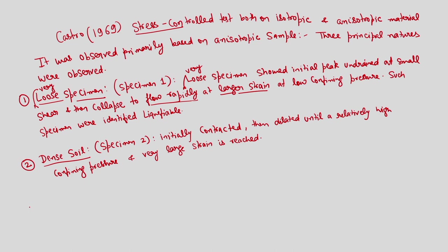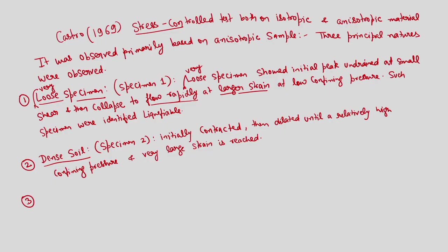Now in between the two samples — based on the initial state and relative density — it is very difficult to clearly demarcate whether a sample corresponds to a very loose or dense specimen. That means we are talking about samples having intermediate relative density. Such samples with intermediate relative density will represent the mixed characteristics of both loose and dense specimens.